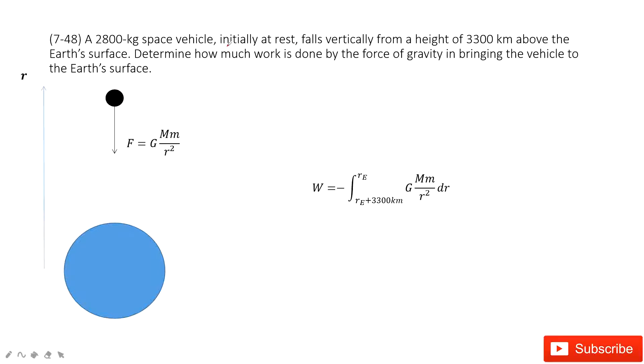Now we can see this space vehicle. Initially, it is stationary and then falls vertically from a height of 3,300 km above Earth's surface. We need to determine how much work must be done by the force of gravity in bringing this vehicle to Earth's surface.